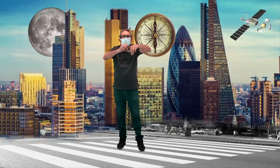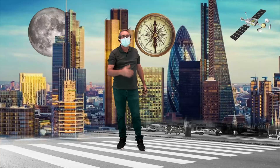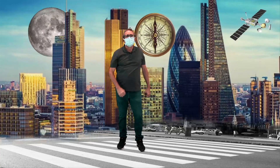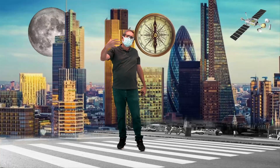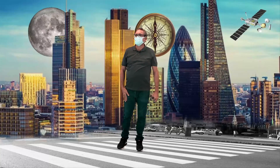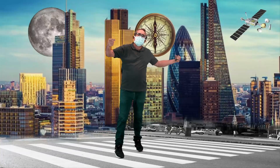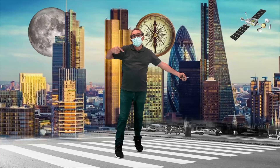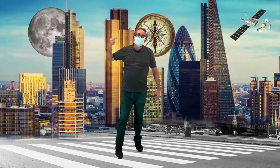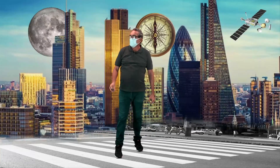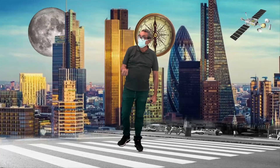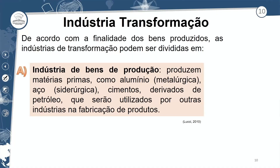É necessário lembrar de alguns conceitos de tipos de indústrias. A indústria extrativa ou extrativista é a extração de recursos naturais de origens diversas, principalmente minerais — como a extração de petróleo no Brasil, ou a extração em Carajás. Depois que eu busco a matéria-prima, como o petróleo, eu passo para uma indústria petroquímica para chegar à gasolina. Essa indústria petroquímica é uma indústria de transformação. A siderúrgica também é uma indústria de transformação — ela produz matérias para outras indústrias, como alumínio, ferro, aço e cimento.